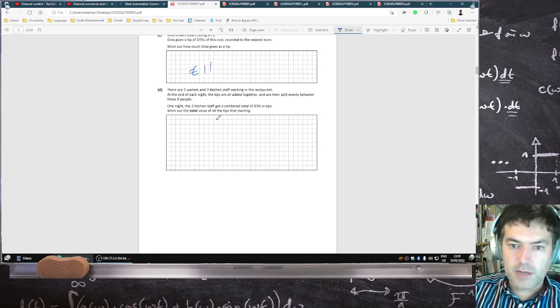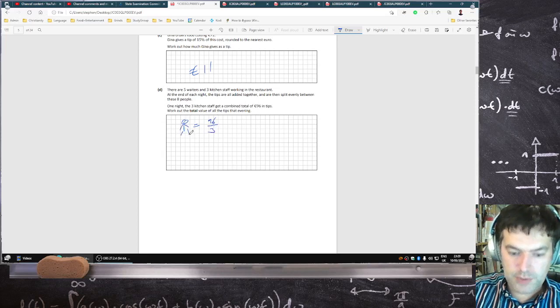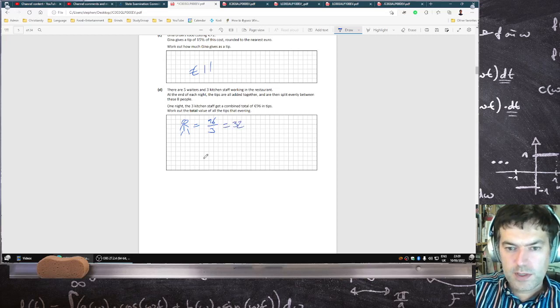So, if 3 of them got 96, then that means one of them will get 96 divided by 3, which is 32. So, then all 8 of them will be 32 times 8, which is 256 euros.